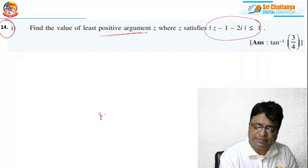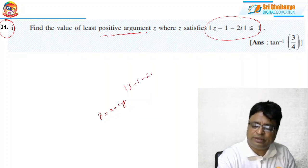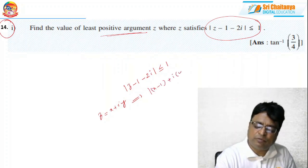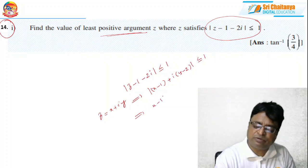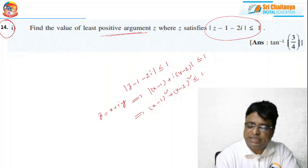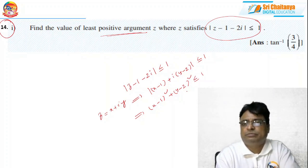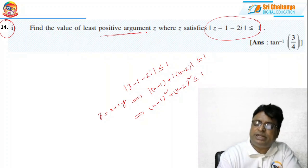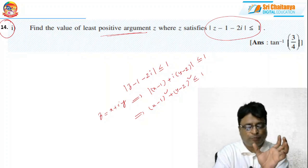Consider z = x + iy. Then |z - 1 - 2i| ≤ 1 becomes |( x-1) + i(y-2)| ≤ 1, which after squaring gives (x-1)² + (y-2)² ≤ 1. This indicates a circle with center (1, 2) and radius 1.